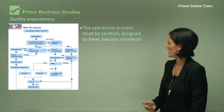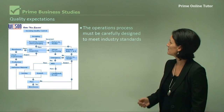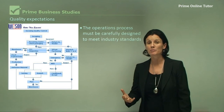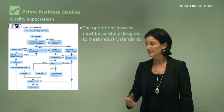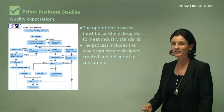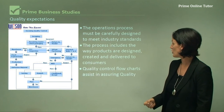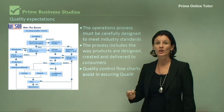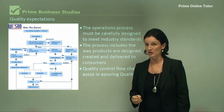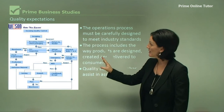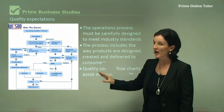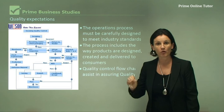The operations process must be carefully designed to meet industry standards. There are industry bodies that check different businesses. The process includes the way products are designed, created, and delivered to consumers. Quality control flowcharts assist in ensuring quality. Businesses are now coming up with a plan before they even make their product, and that plan will have a few steps along the way where the product is checked for its quality.